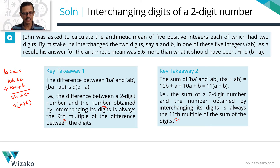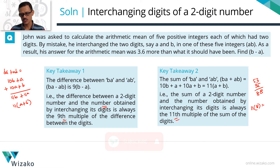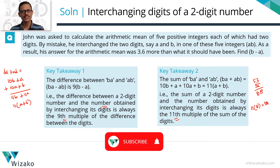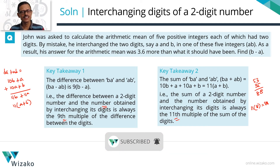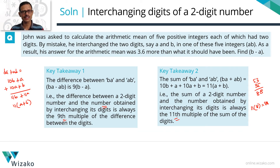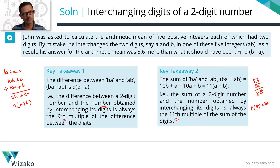Let's verify quickly: 53 plus 35 equals 88. The 11th multiple of the sum of the digits: 5 + 3 = 8, times 11 = 88. Correct. So anytime you see a two-digit number with interchanged digits, immediately ask: difference? Use 9×(B − A). Sum? Use 11×(A + B).